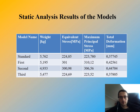Static analysis results of the models are shown here. The first and second optimized models' stress values are increased by 30 percent. The third optimized model's stress values are decreased by 1 percent. For the first and second optimized models, this is not a desired situation, because in optimization problems it is desired that stress values be less than or at least equal to the original.